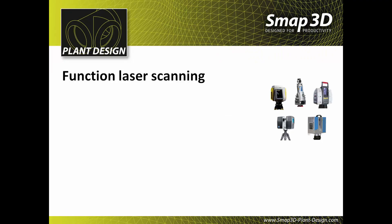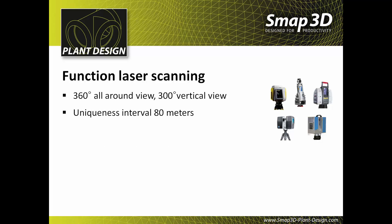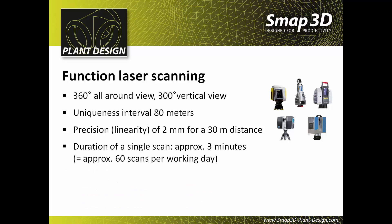The underlying laser scanners used nowadays offer the following features: an all-around visibility of 360 degrees with vertical visibility of 300 degrees, an ambiguity interval of 80 meters, and a linear precision of 2 millimeters at a distance of 30 meters. The duration of a single scan is approximately 3 minutes. Together with the necessary setup time, a two-man team creates an average of around 60 scans per working day. A 3,000 square meter hall can thus be scanned in 2 to 3 working days.